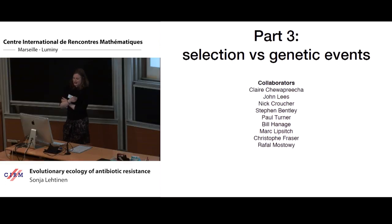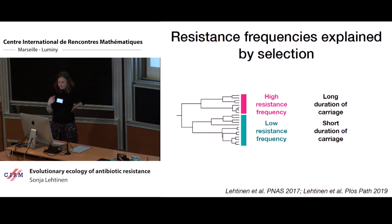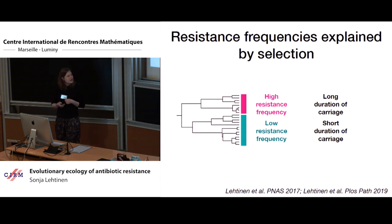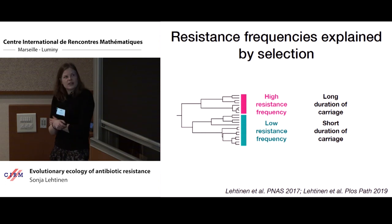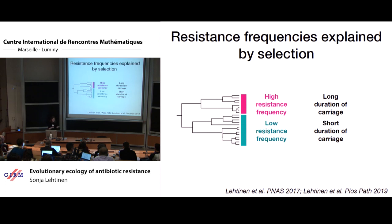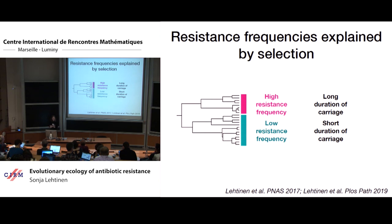In the last part of this talk, I'll discuss the sorts of explanations we give for patterns of resistance. So far I've been talking about explanations in terms of selection: when we observe high frequencies of resistance on one lineage and low resistance frequencies on another, that's because there is a different selection pressure for resistance between these lineages — in this case often related to duration of carriage. This idea is supported by a correlation between the frequency of resistance and duration of carriage.